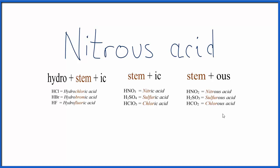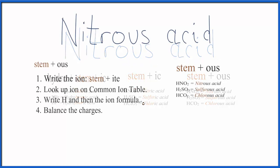When we have an acid that ends in OUS, we'll follow these rules. First we'll write the stem of the acid, that's the NITR.